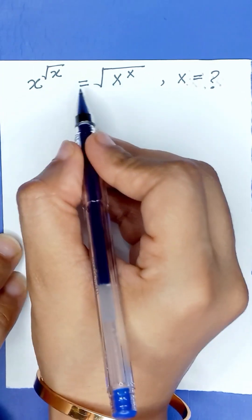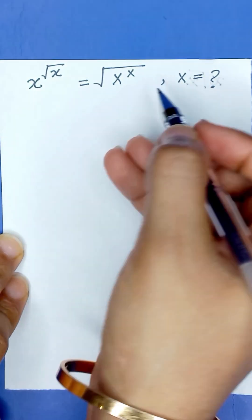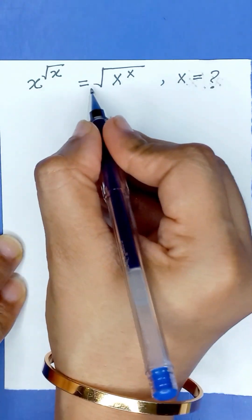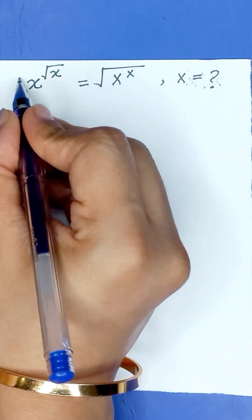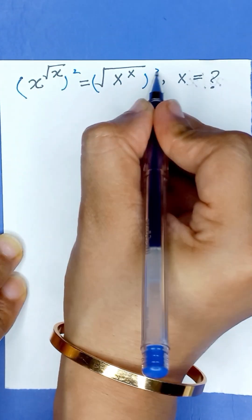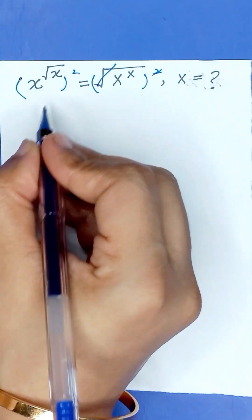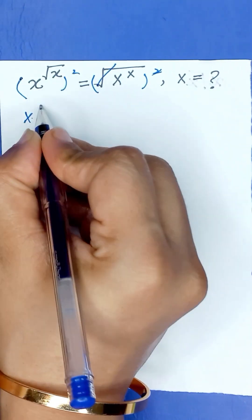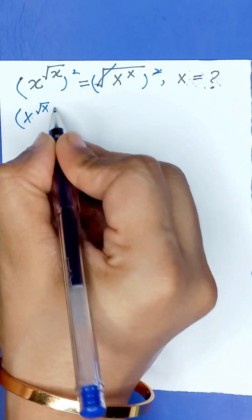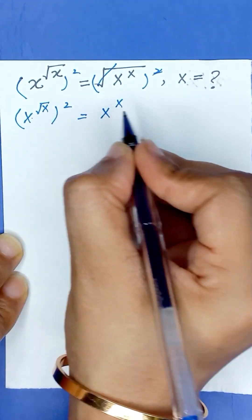x raised to the power square root of x is equal to square root of x raised to the power x, and we will find the value of x. First, we will remove the radical sign by applying a square on both sides. The square and square root will cancel out, and it will become x to the power square root of x, and its power 2 is equal to x to the power x.